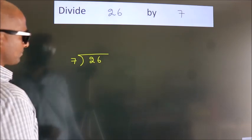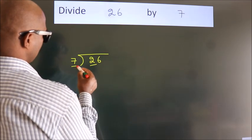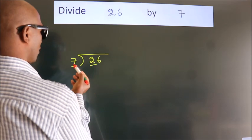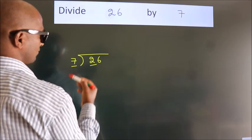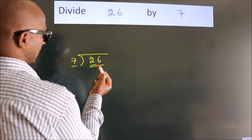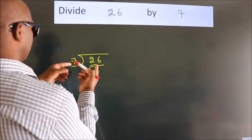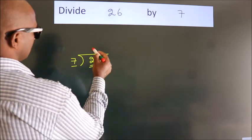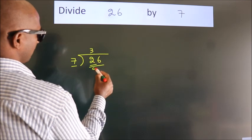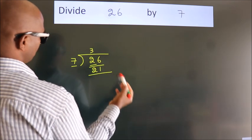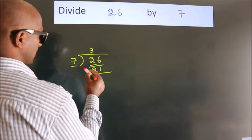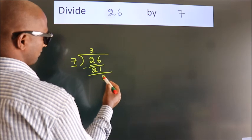Next, here we have 2. Here, 7. 2 is smaller than 7, so we should take 2 numbers: 26. A number close to 26 in the 7 table is 7 threes, 21. Now we should subtract. We get 5.